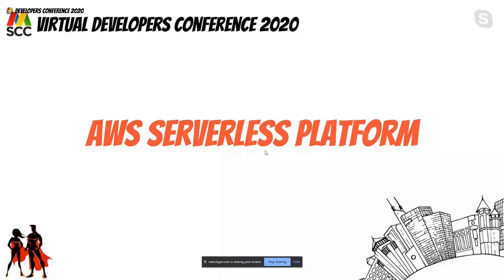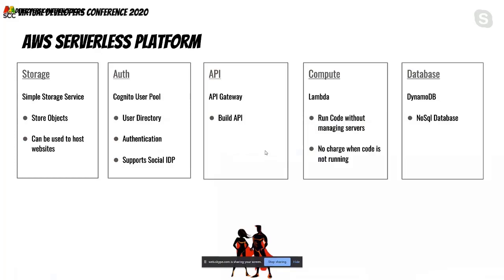In terms of storage, we have S3 — Simple Storage Service — which is like a file system where you can store objects. One fun fact is that you can even use S3 to host websites. The second service is the authentication service: Amazon Cognito. Cognito consists of user pools — just like a user directory — used to perform authentication. It also supports social identity providers such as Facebook. For the API, we have AWS API Gateway, which is totally managed by AWS, allowing you to create REST, HTTP, or WebSocket APIs.